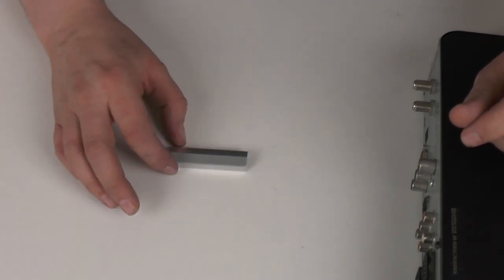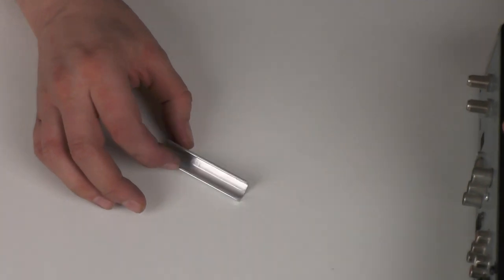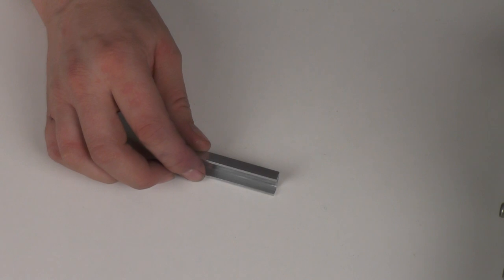You may say to yourself what on earth is this? It just looks like a piece of metal. Well it is just a piece of metal but it is a very useful tool. It's called an F-Connector Fitting Tool.